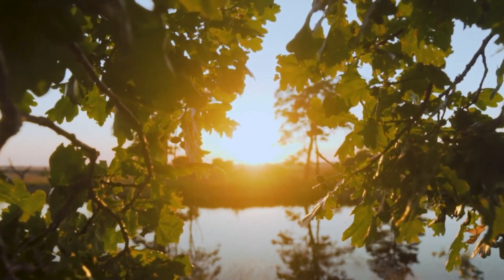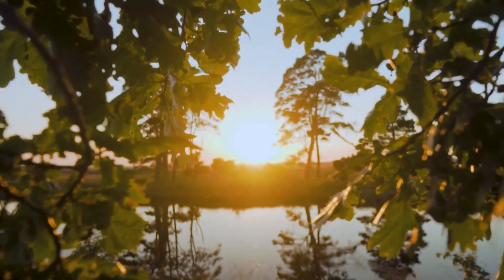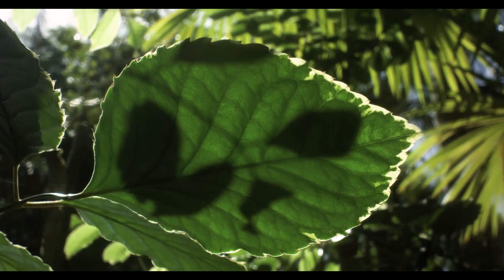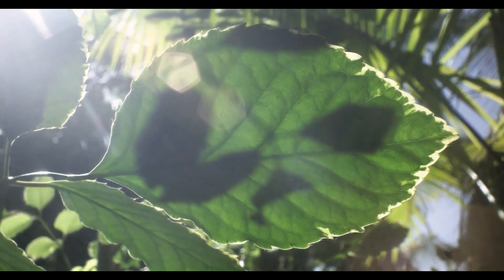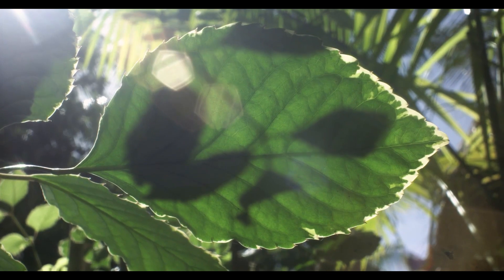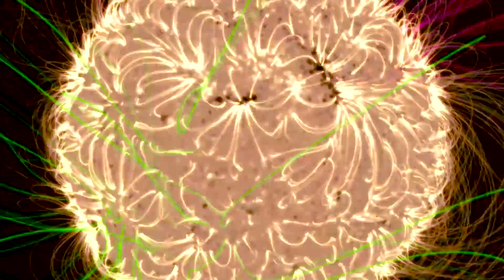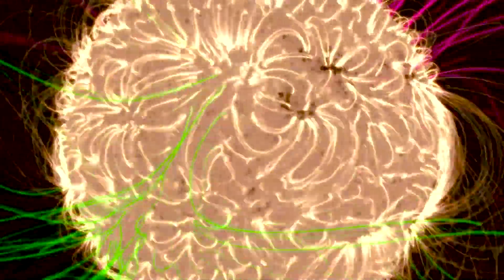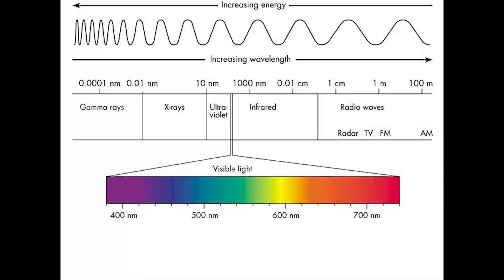Sunlight is imperative for life on Earth, as it provides energy for photosynthesis in vegetation, and helps to alter a number of physiological processes in animals and humans. Sunlight is a form of electromagnetic radiation that is emitted by the sun — a kind of energy that travels through space in the shape of waves or particles.